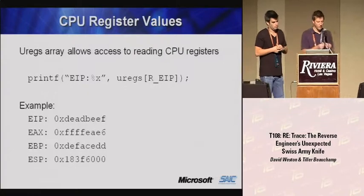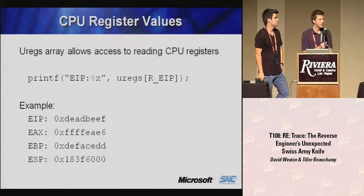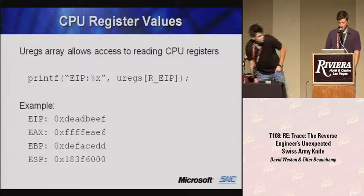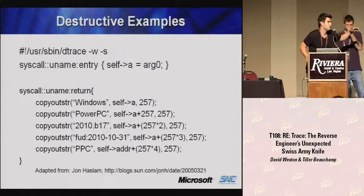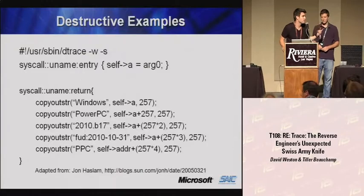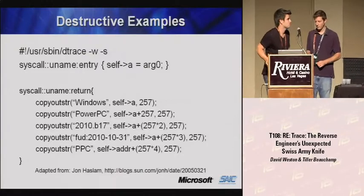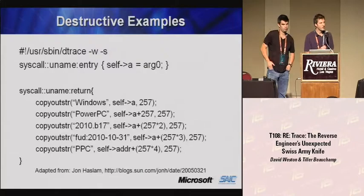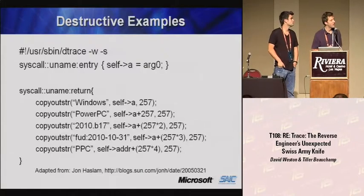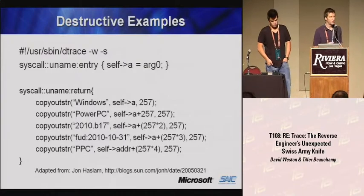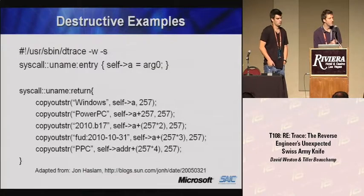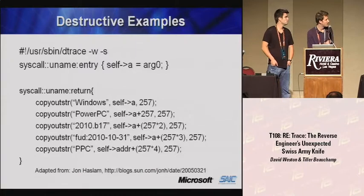We also have a convenient way to reference all CPU context. With the global uregs variable DTrace provides, we can print out values like EIP, EAX, and all CPU registers. This works on multiple architectures — PowerPC, SPARC, x86. Here's a cute little example that hooks the uname system call and then changes what it's going to return: we record the pointer to the buffer on uname entry, and then on return we overwrite that buffer with our own information, so Windows appears to be running on a PowerPC architecture in 2010.